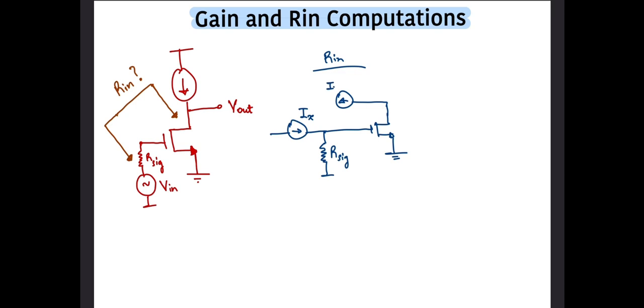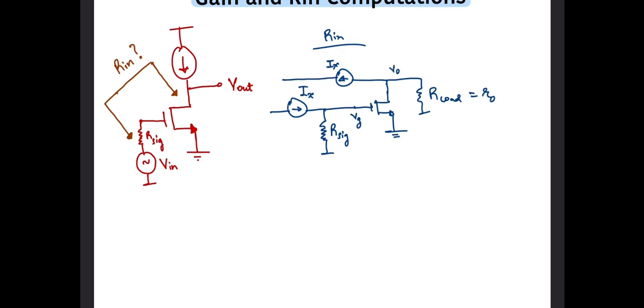In order to do so, we will first short the independent input voltage source. Next, we'll sink and source a current of ix from the two nodes across which we wish to compute the input impedance. Our goal is simple: it is to find the voltage developed across these two nodes so that we can divide that by ix and find the equivalent impedance across these two nodes.